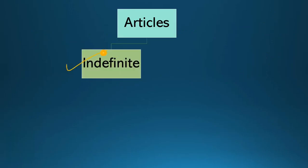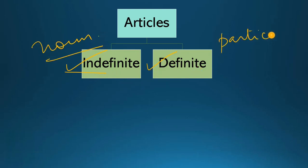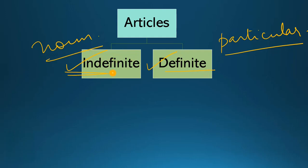Now we have two types of articles. The first is an indefinite article and the other is a definite article. Indefinite article किसी भी general noun के आगे use होगा, and definite article किसी particular noun के आगे use होगा. तो जब भी हम किसी particular चीज़ की बात कर रहे हैं — किसी particular person, place or thing — we will use a definite article. And when we are talking about a general person, place or thing, we will use an indefinite article.